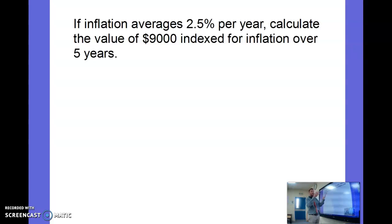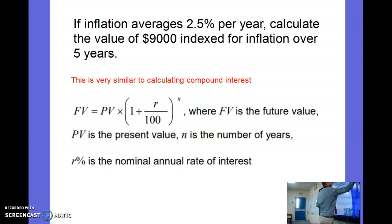indexed for inflation - that's how we describe it when we are adding inflation on and working out what that $9,000 would be like over five years. If I've got $9,000 today, what would its equivalent value be in five years?